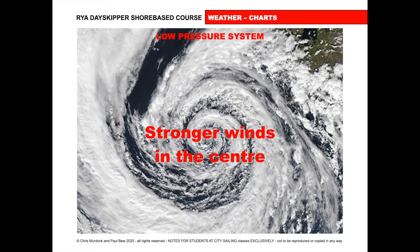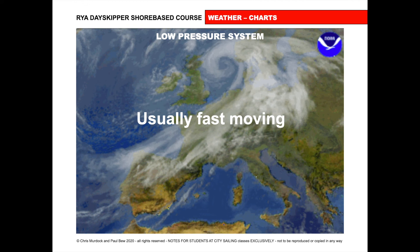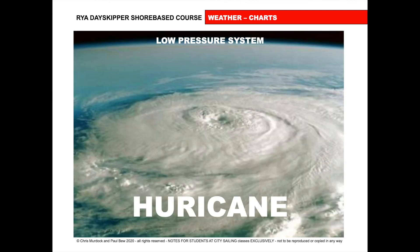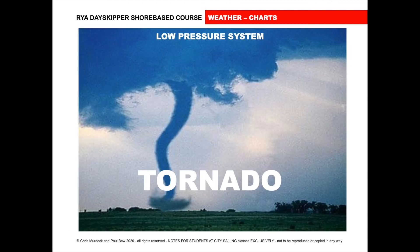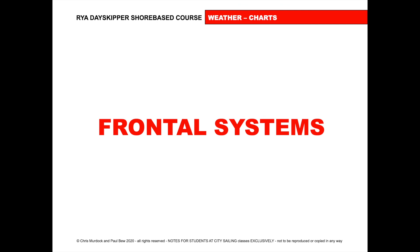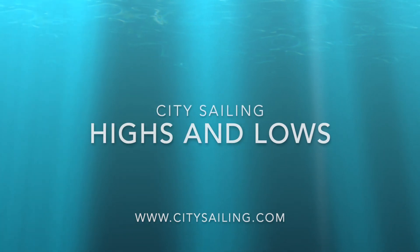Low pressure systems have stronger winds in the middle and are usually fast moving. They track along the jet streams, typically coming from America and travelling east towards us from the west. An extreme version is a hurricane; a local version is a tornado, or on the water, a waterspout.